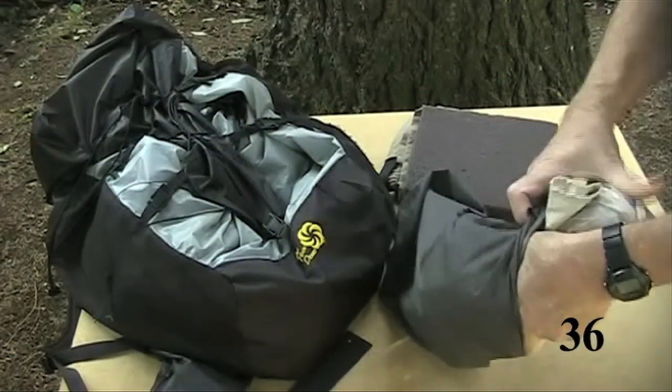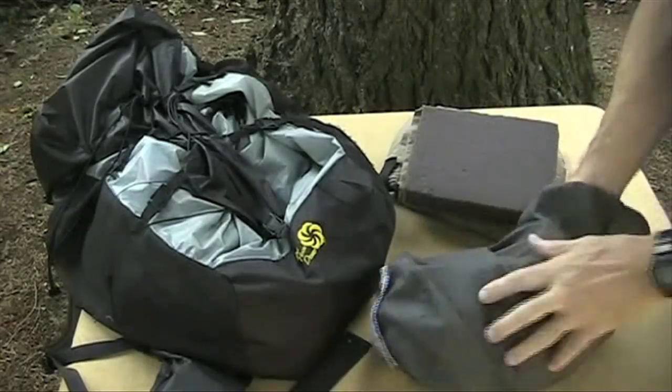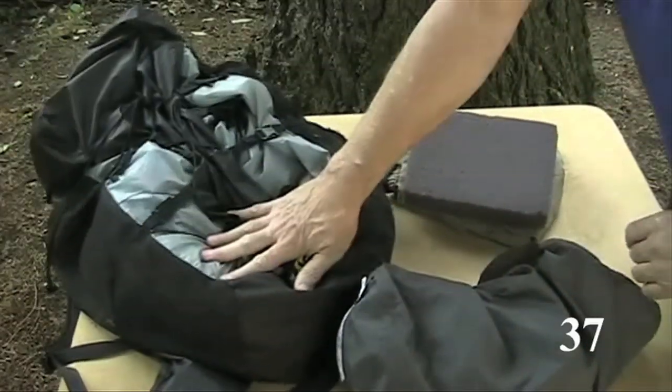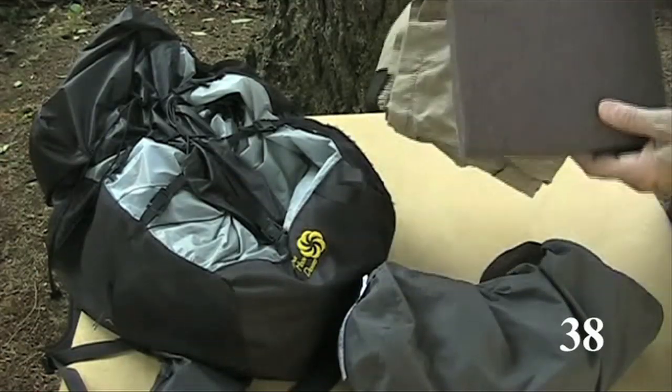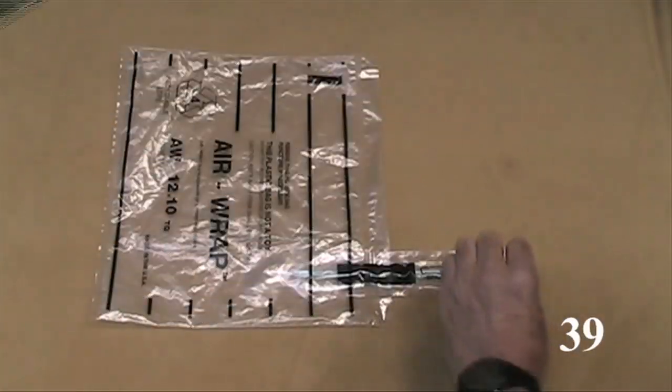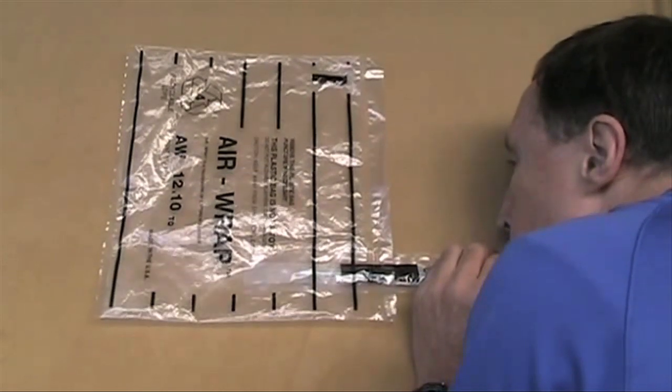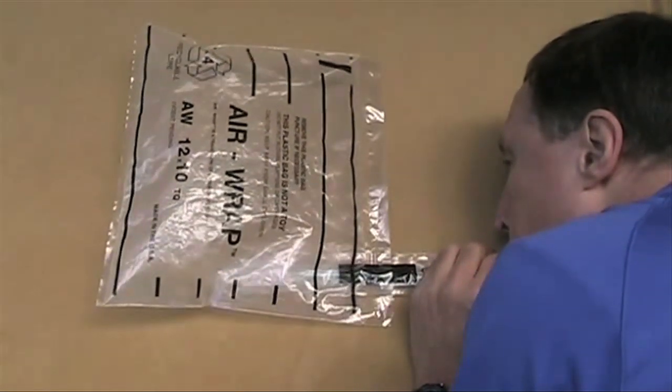Extra clothing can be your pillow. You can put the extra clothing in your sleeping bag stuff sack. Your pack can be your pillow. It saves room in the tent and it's easy to find gear. A small piece of foam with some gear underneath can serve as your pillow. A 4 tenths of an ounce plastic packing bubble from Office Depot that inflates with a straw can be your pillow.